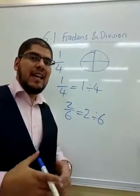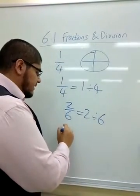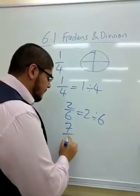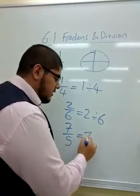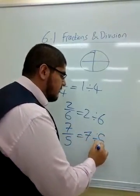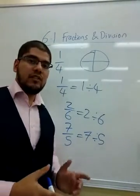Even if the fraction is improper, meaning it is 7 over 5, still the same, it's 7 divided by 5, it's still written this way.